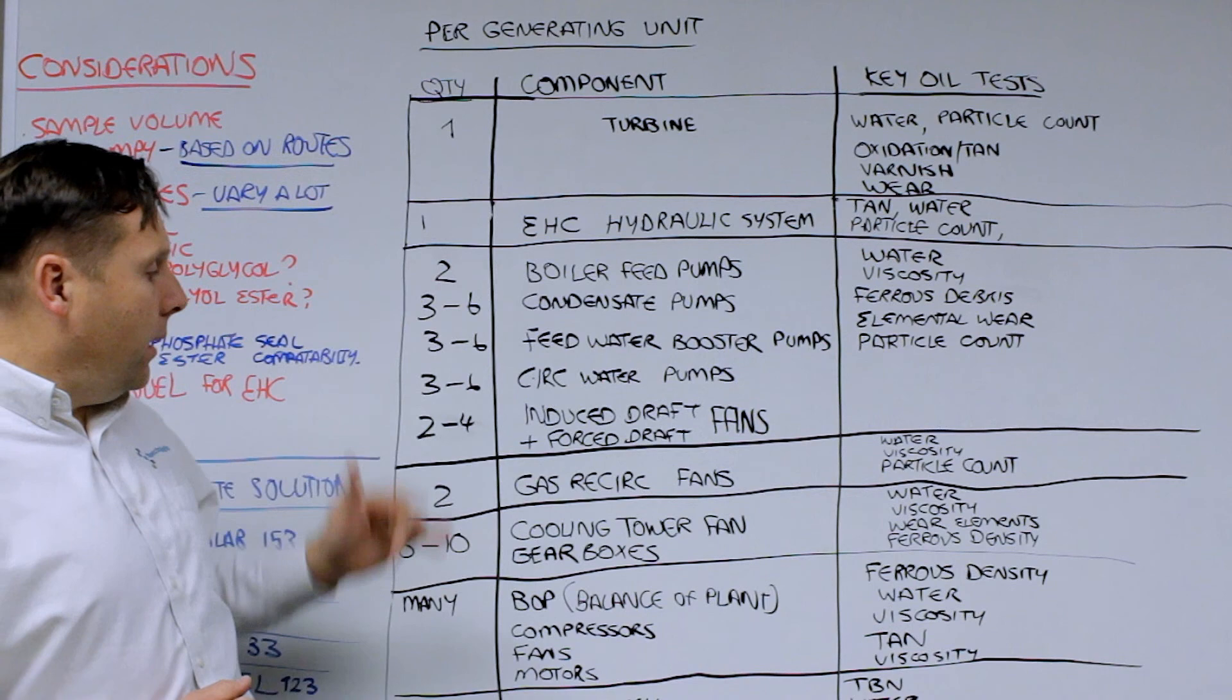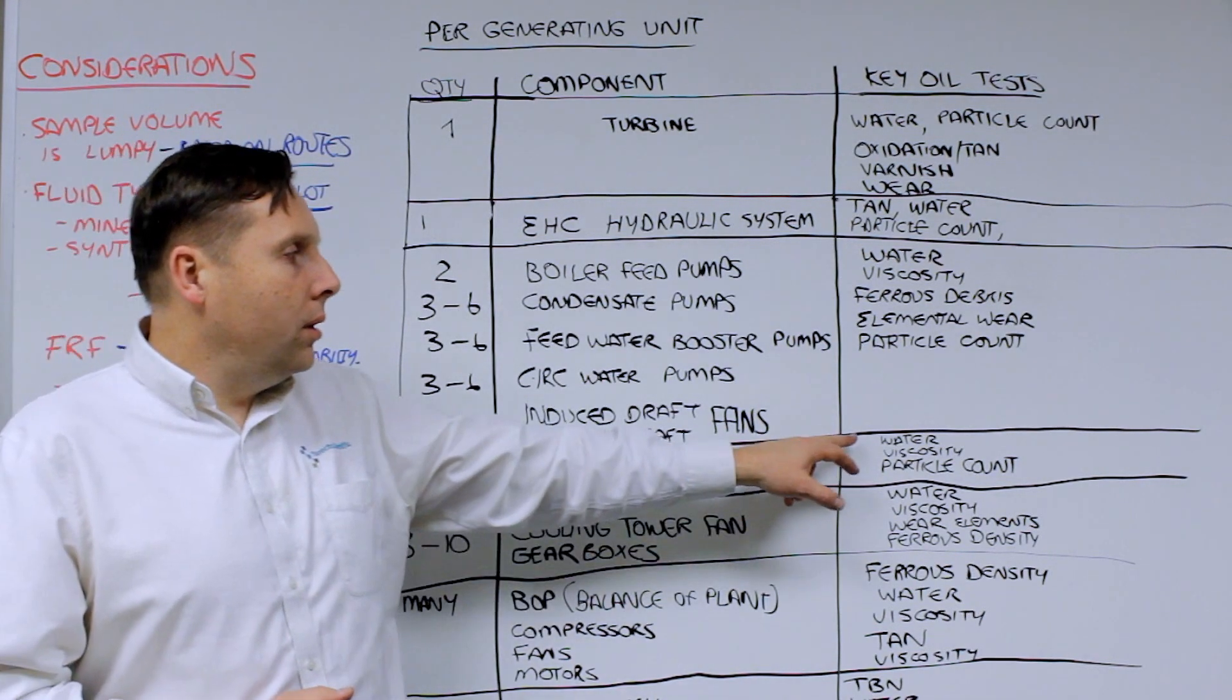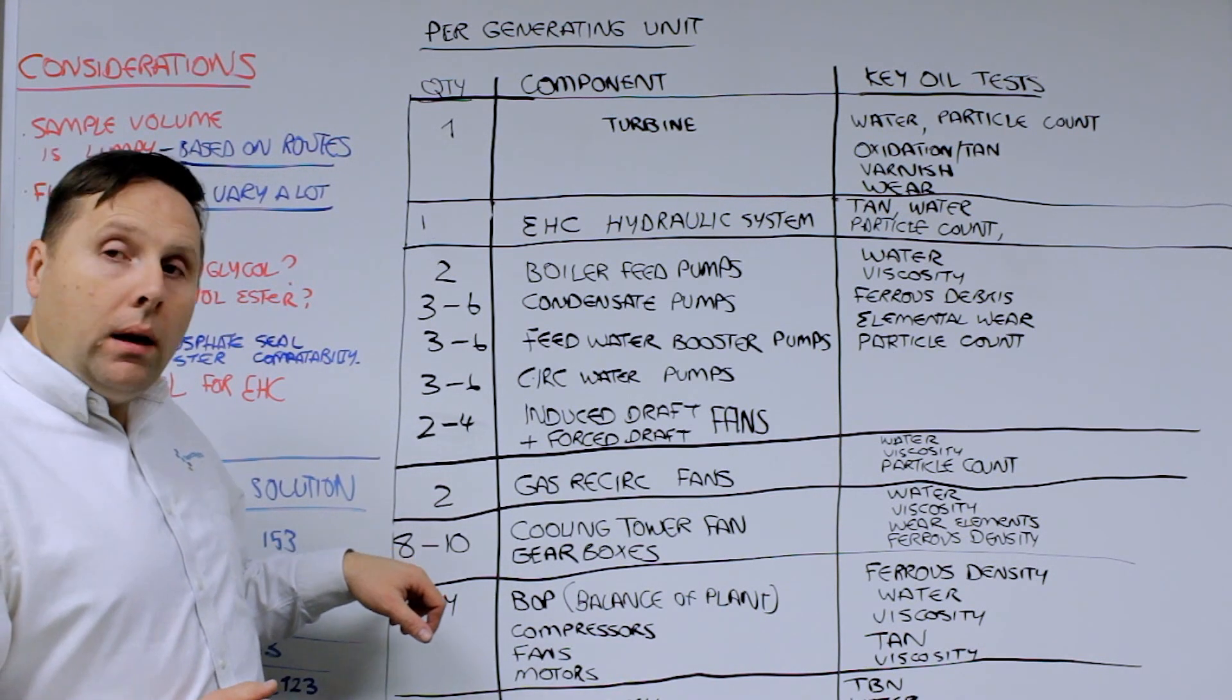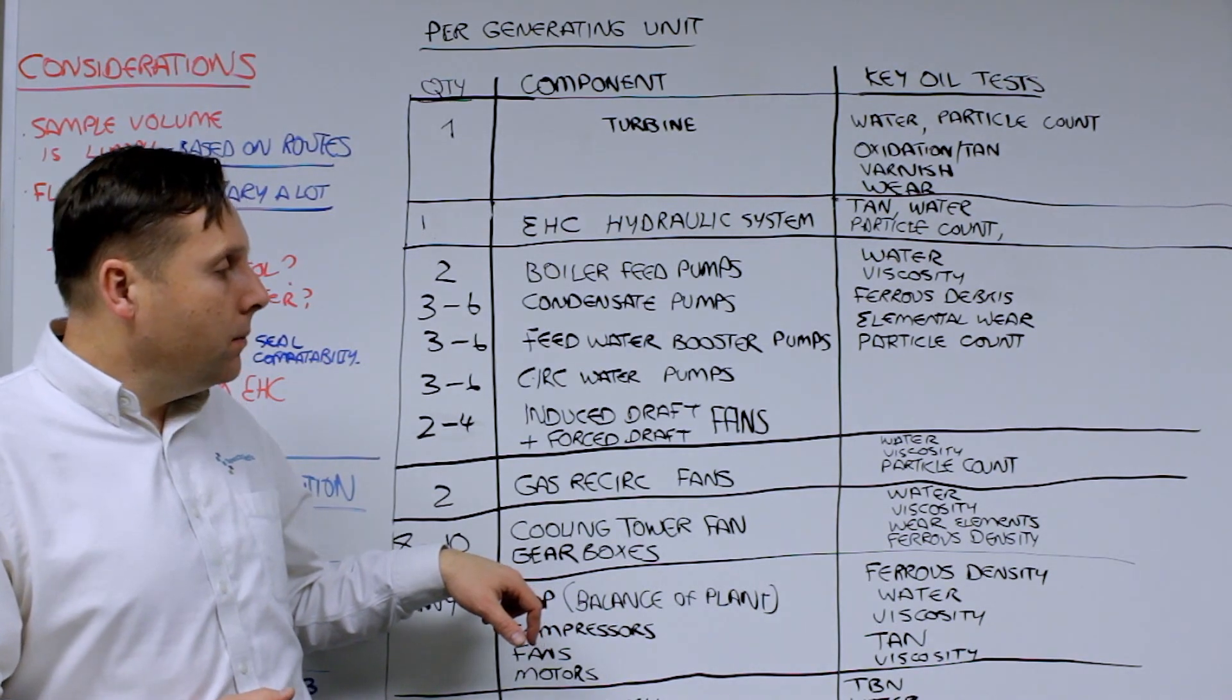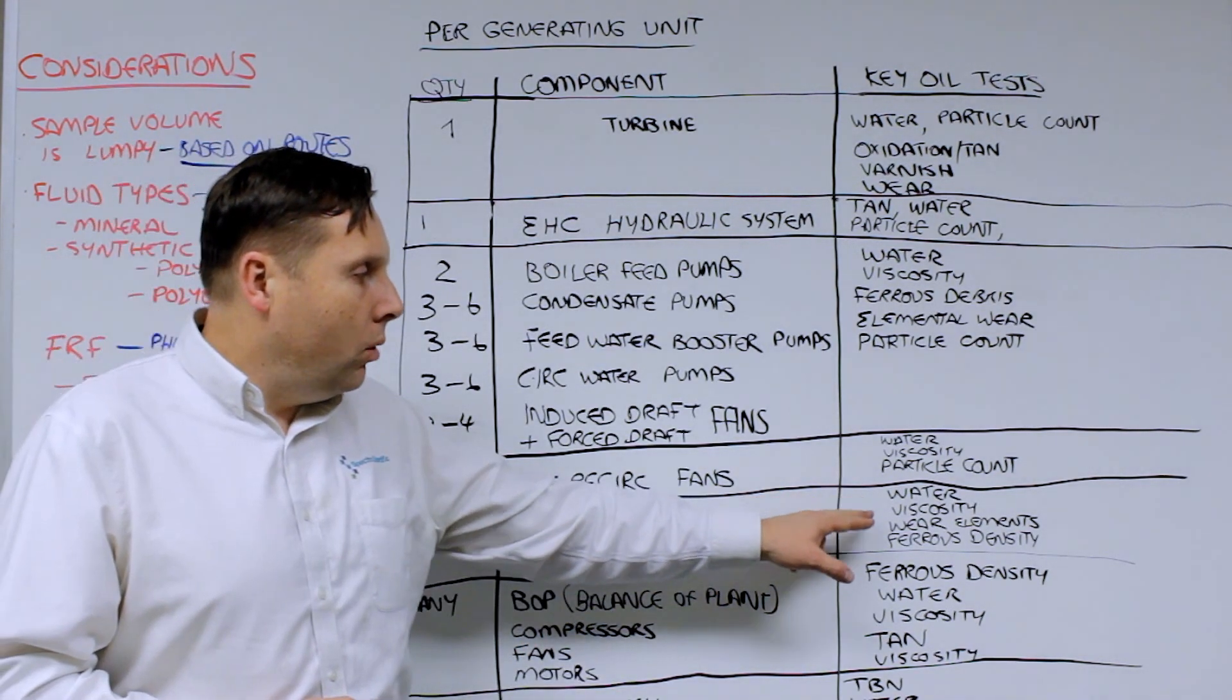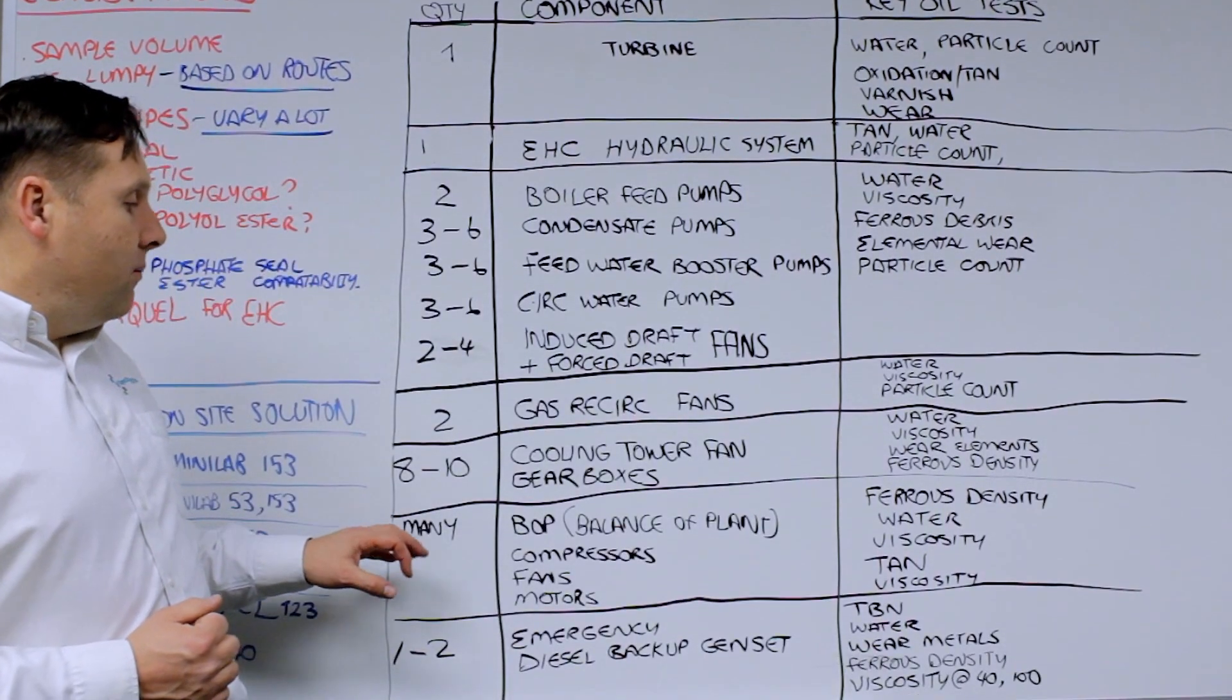In addition to that, you can have gas recirculating fans, which are concerned about water, viscosity, and particle count. You can have, depending on the application, eight to ten cooling tower fan gearboxes. You may have the motors on those as well. You're concerned about water, viscosity, wear, and ferrous density.